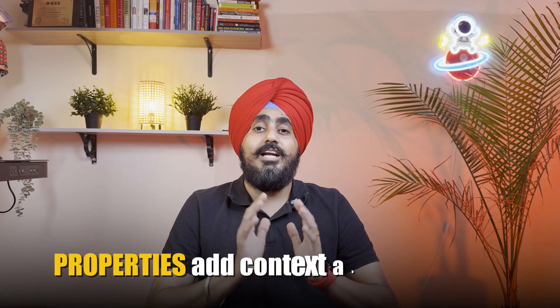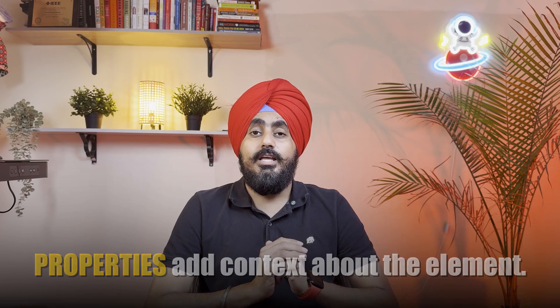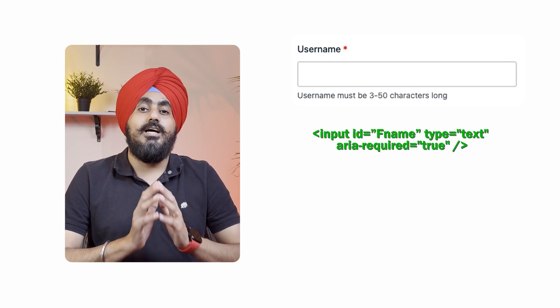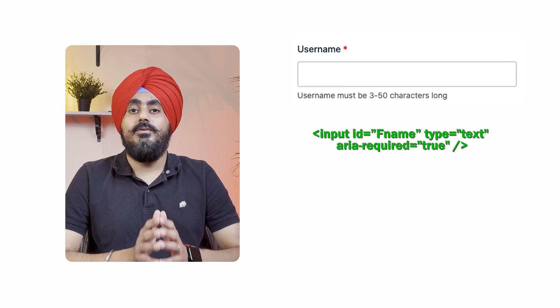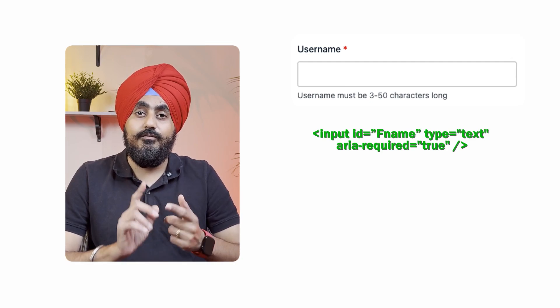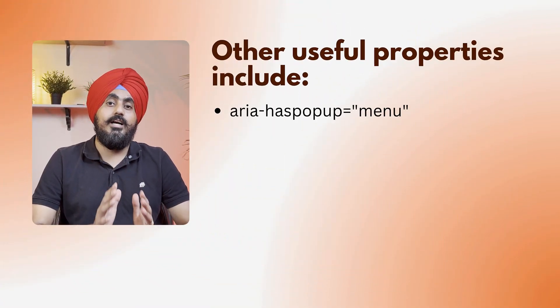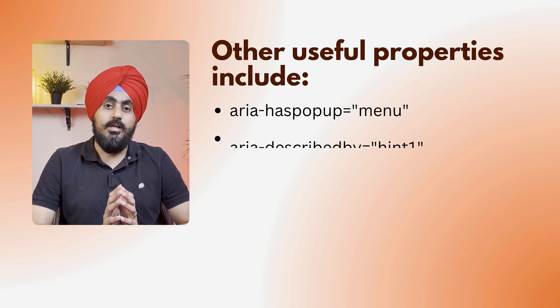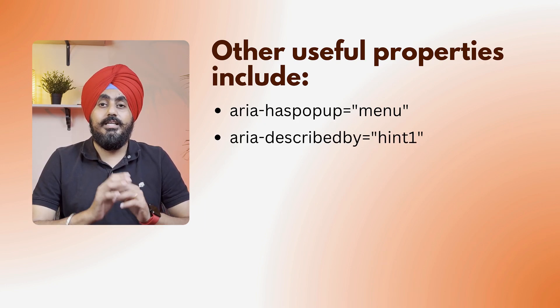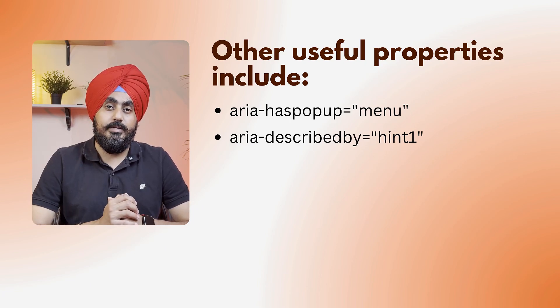ARIA properties add context about the element — they don't change anything, they just describe it. For example, when you add aria-required='true' to an input for first name, it will inform a screen reader: 'first name, star, edit, is required.' That's crucial information, especially for forms. Other useful properties include aria-haspopup='menu', which tells if clicking will open a menu, and aria-describedby, which connects an input to another visible element on the page.